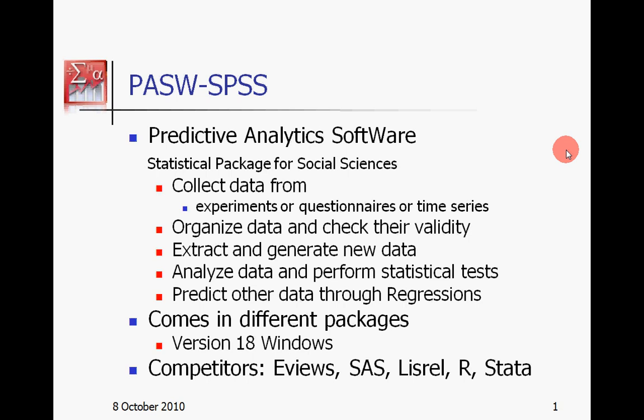SPSS comes in different packages. The version installed in October 2011 at the University of Bolzano is version 18 for Windows, and version 19 will probably be installed soon. Its major competitors are EVUS, dedicated to economic analysis; R, a less user-friendly but free statistical package; and the older SAS, as well as LISREL and STATA, which are usually dedicated to more specific things.